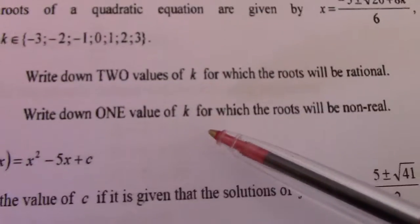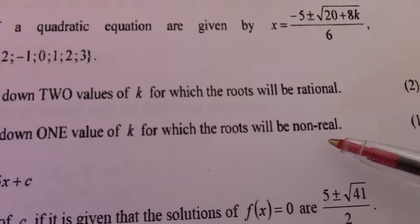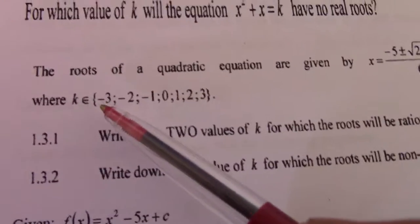Then they say write down one value for k for which the roots will be non-real. So for the roots to be non-real, the square root must be negative. So you can go back,